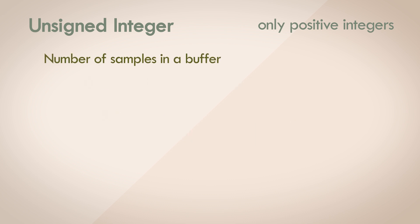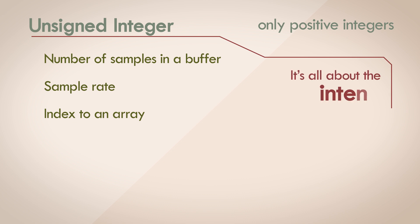For example, the number of samples in a buffer can't be negative. Same with the sample rate, and same with the index of an array. A negative index doesn't really make any sense. Again, it's all about the intent, it doesn't give you any added performance advantage.